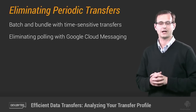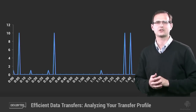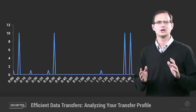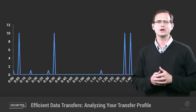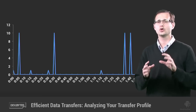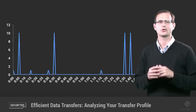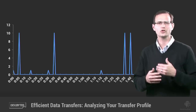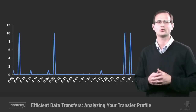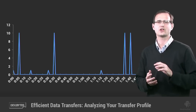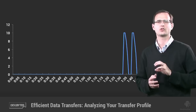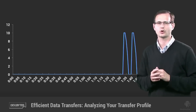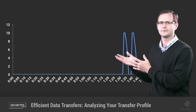Another pattern to look for is short spikes, either in height or duration. While they may not be regular, they typically indicate transfers that could be bundled together in the same way as periodic transfers, or possibly batched together or even prefetched. The same thing goes for transfers of any kind that happen in close proximity but don't quite overlap.